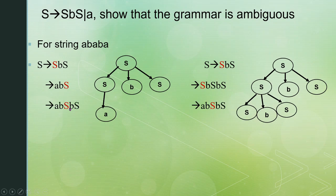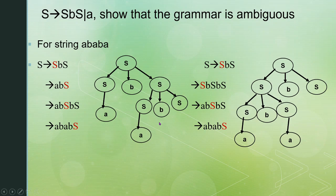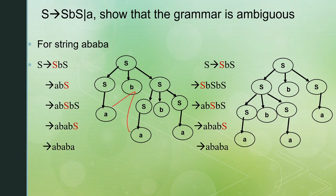In the second derivation, starting from S, I select S B S again but expand the right S first using S B S, giving S B S B S. Then replacing each S with A, using S gives A, we get A B A B A through a different order of substitutions, producing a different parse tree.